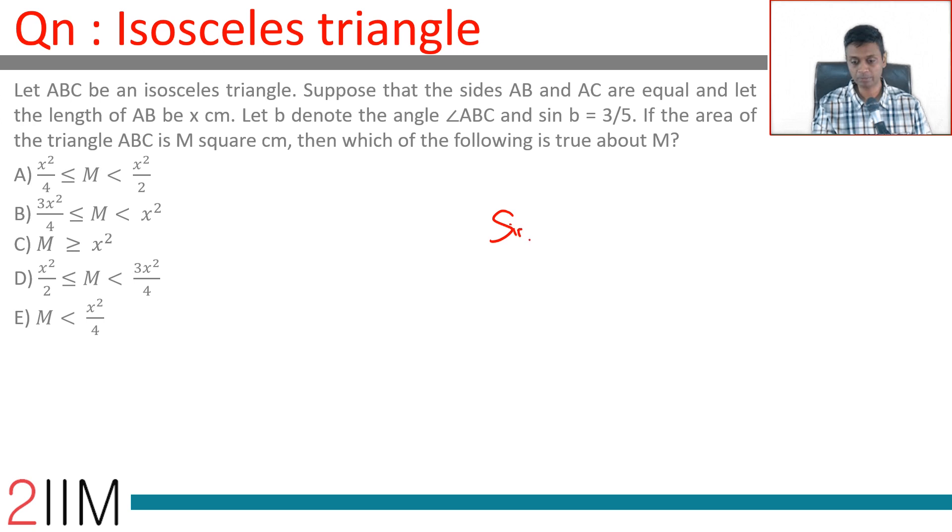Sin 2B is 2 sin B cos B. 2 into 3 by 5 into 4 by 5. 2 into 3, 6 into 4, 24 by 25.